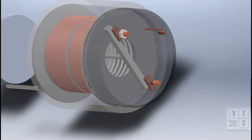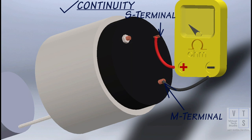Check for continuity across magnetic switch S and M terminal. If no continuity exists, pull-in coil is open and should be replaced.